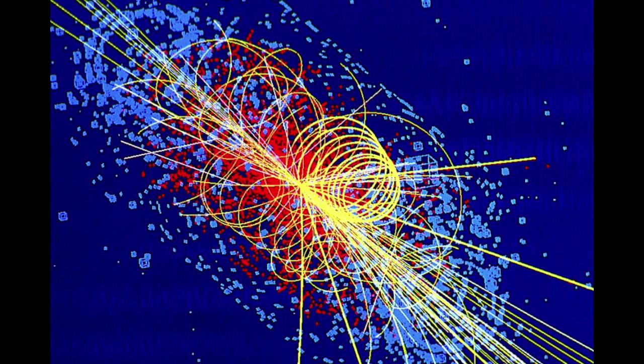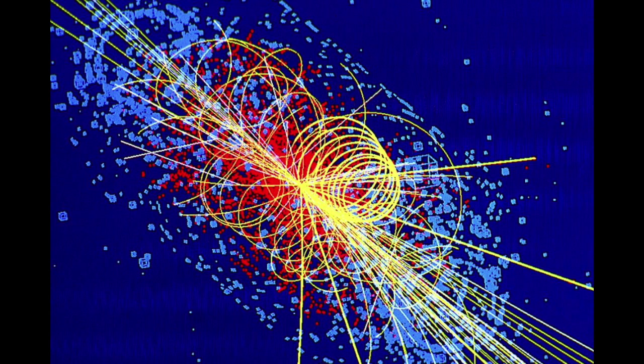The last of the bosons is the Higgs boson, and the Higgs boson is responsible for giving particles their mass. How it does this will be explained in other videos. The Higgs boson is the latest discovery in particle physics, and was discovered on July 4, 2012, at the Large Hadron Collider. Without the Higgs boson, the Standard Model would not work because the Higgs is a necessary component in the equation. All of these H's I circled represent the Higgs particle.